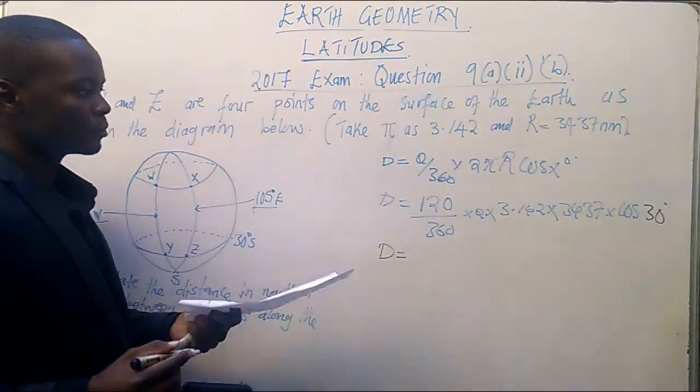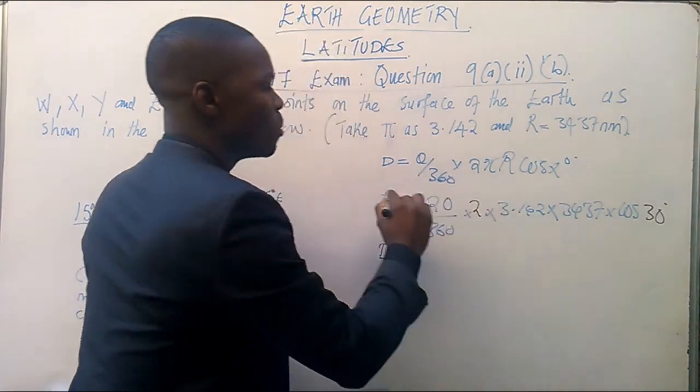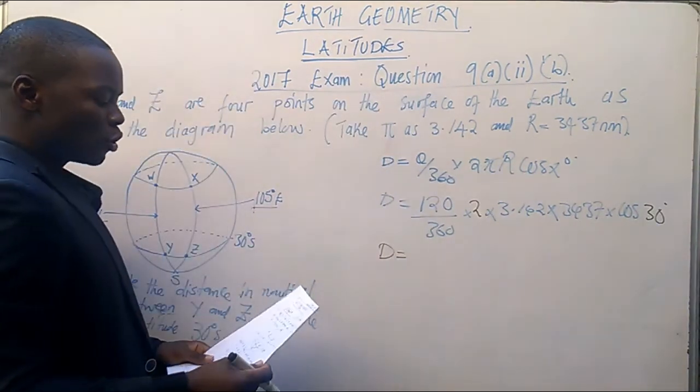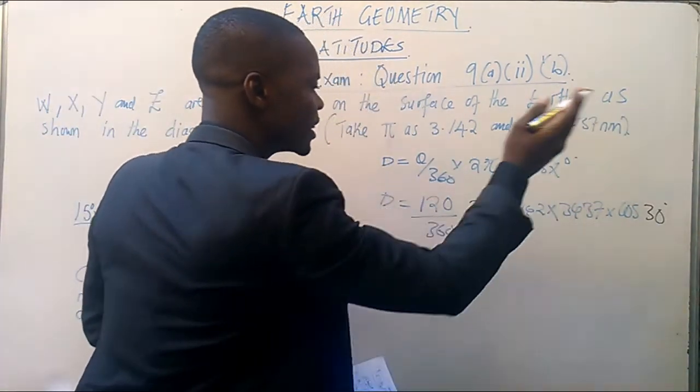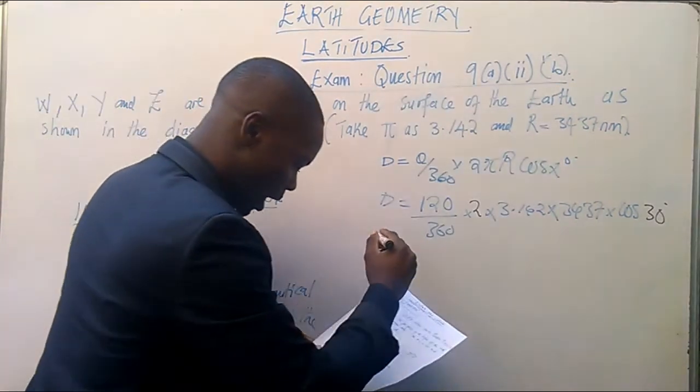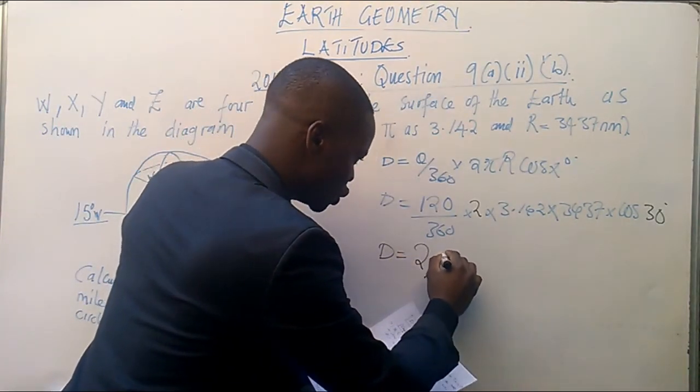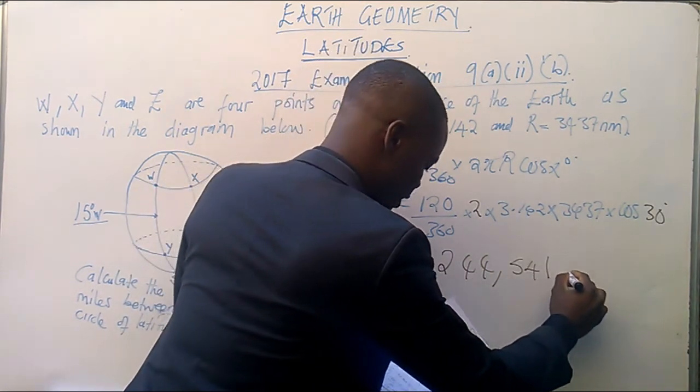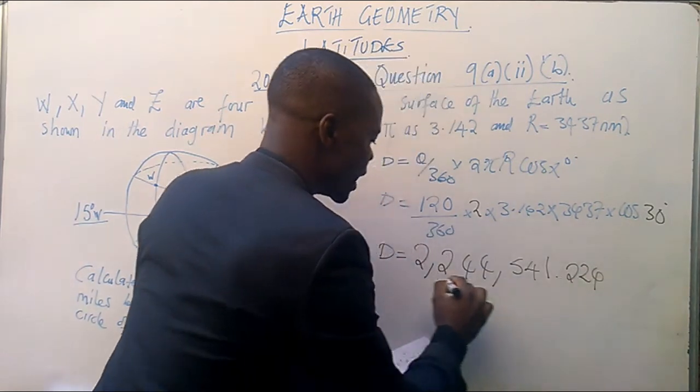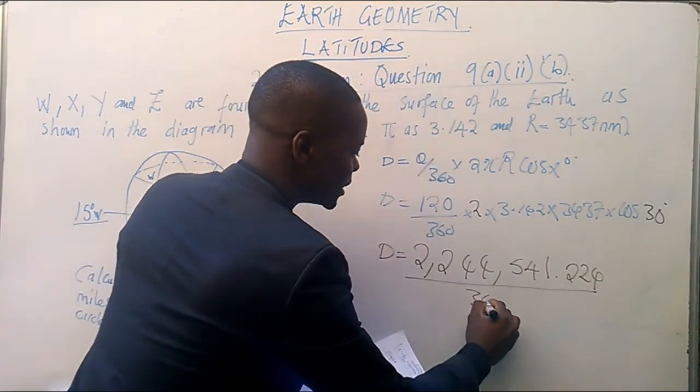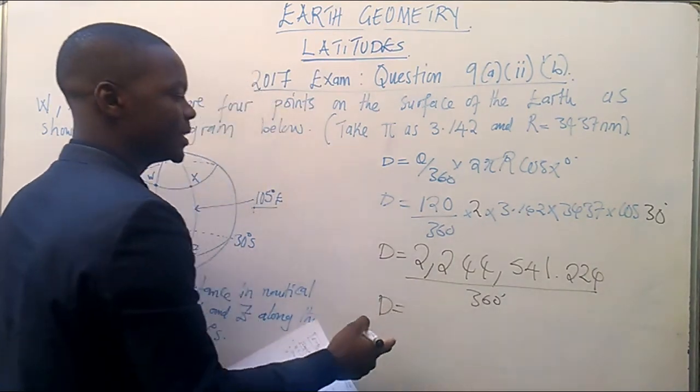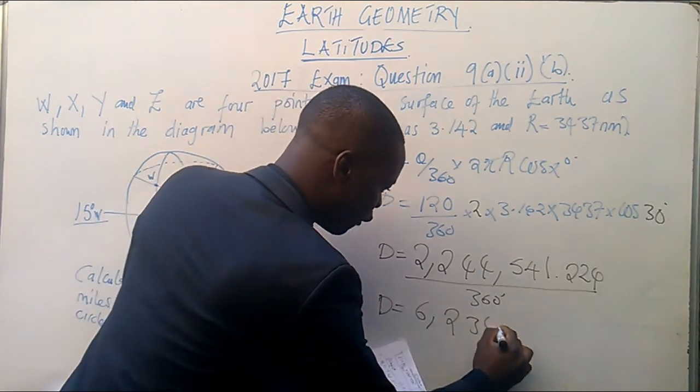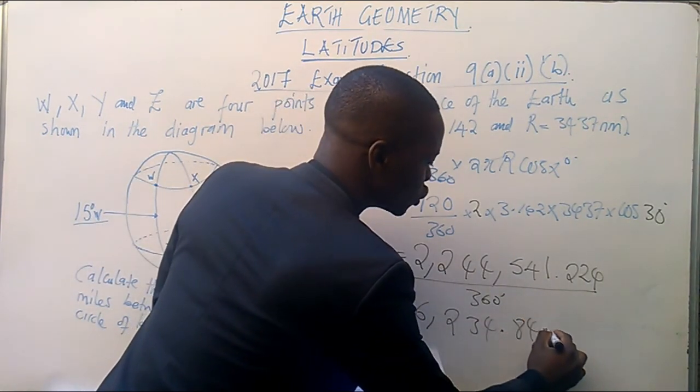So, now, distance is equal to... Okay. At this stage, what you must do now, you must calculate the value of your numerator by multiplying them. So, when you use your calculator and multiply this numerator, you are going to have 2,244,541.224, everything divided by 360. So, when you divide now, 360 into your numerator, you are going to have 6,234.84 nautical miles.